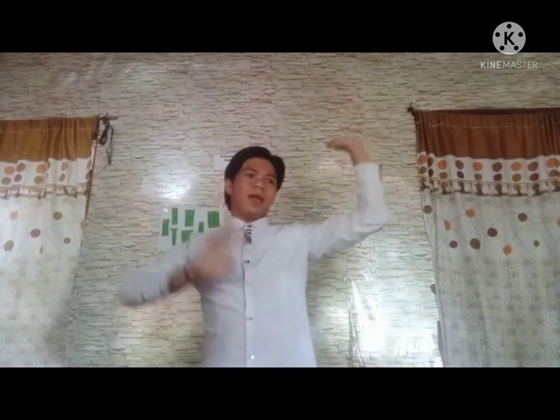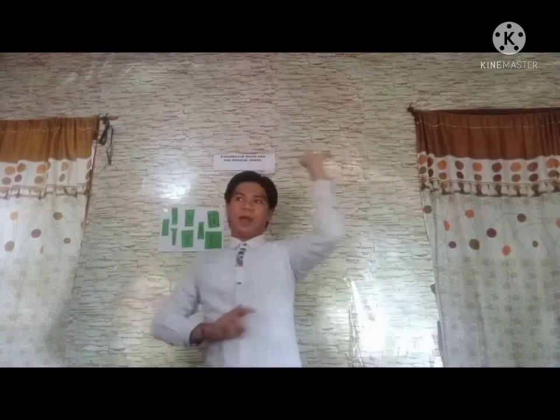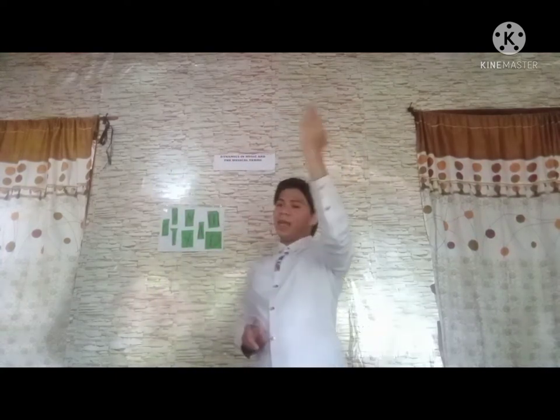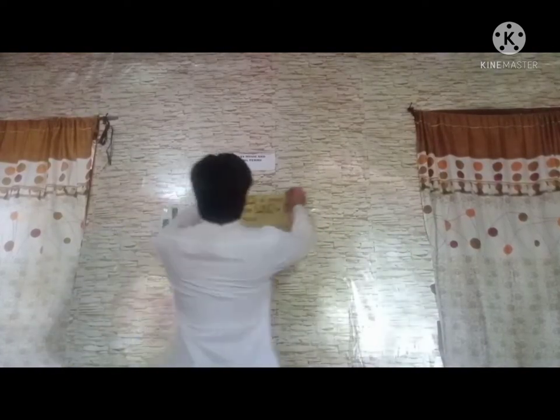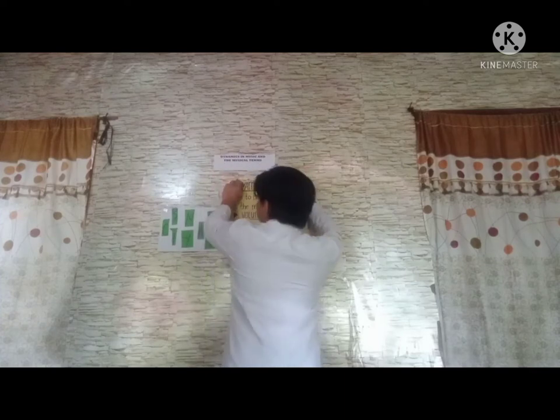What do you think our lesson for today? Okay, very good. It's all about dynamics in music and musical terms. So, any idea about dynamics? It is sound. It is volume. Okay, very good. Dynamic in music refers to how loud or soft the music is. It is best described as the volume of music, either being loud or quiet or soft.